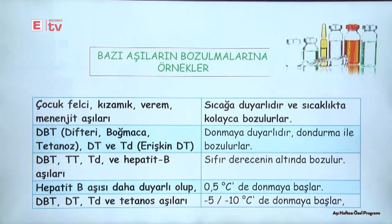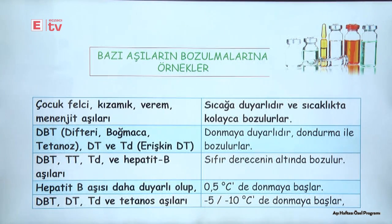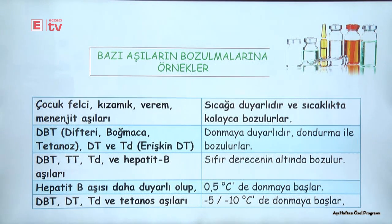Aşıların bozulmalarına örnek verecek olursak; çocuk felci dediğimiz polyo aşısı, kızamıkçık ve verem aşıları daha çok sıcaklığa duyarlıdır, ısıyla birlikte bozulurlar. Diğer taraftan difteri boğmaca tetanoz yani DBT, difteri tetanoz ve erişkin difteri tetanoz aşıları ise donmaya duyarlıdırlar.